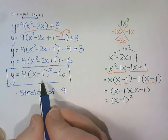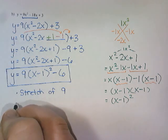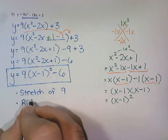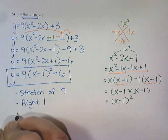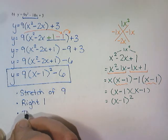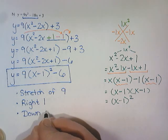In the H position, we have a -1. So that is going right 1. And in our K position, we have -6, which is going down 6.